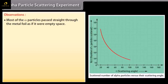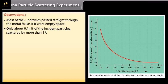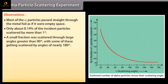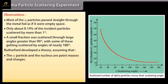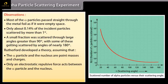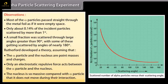Observations: Most of the alpha particles passed straight through the metal foil as if it were empty space. Only about 0.14% of the incident particles scattered by more than 1 degree. A small fraction were scattered through large angles greater than 90 degrees, with some scattered by angles of nearly 180 degrees. Rutherford developed a theory assuming the alpha particle and nucleus are point masses and charges, with only electrostatic repulsive force acting between them.